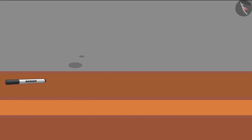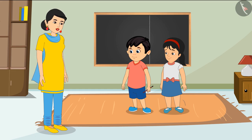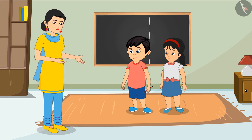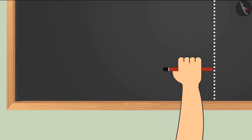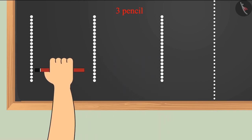'Chotu, first keep the pencil at the starting point and see how many pencils are required to measure.' 'Okay mommy.' Chotu begins to measure the space with his pencil: one pencil, two pencils, three pencils...